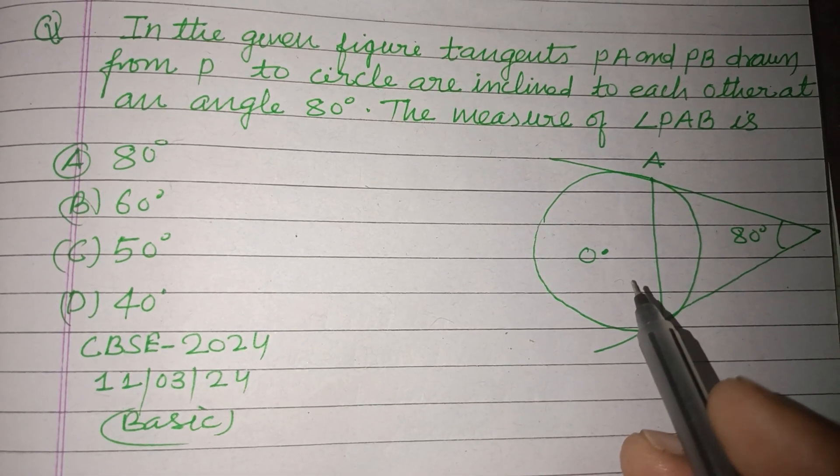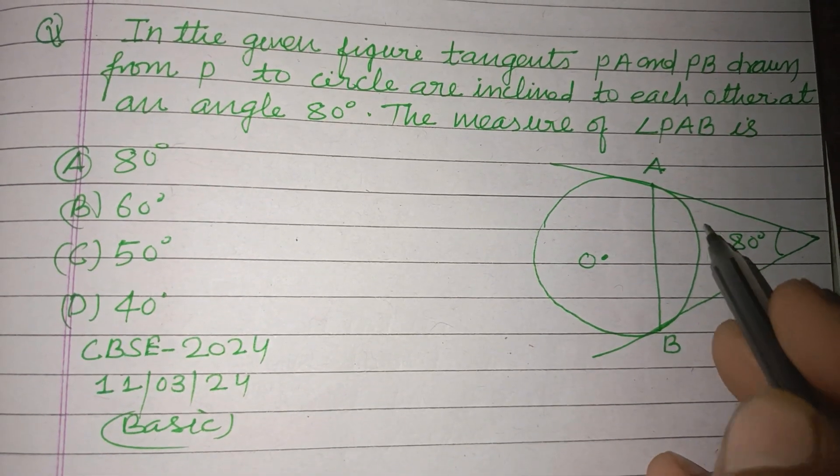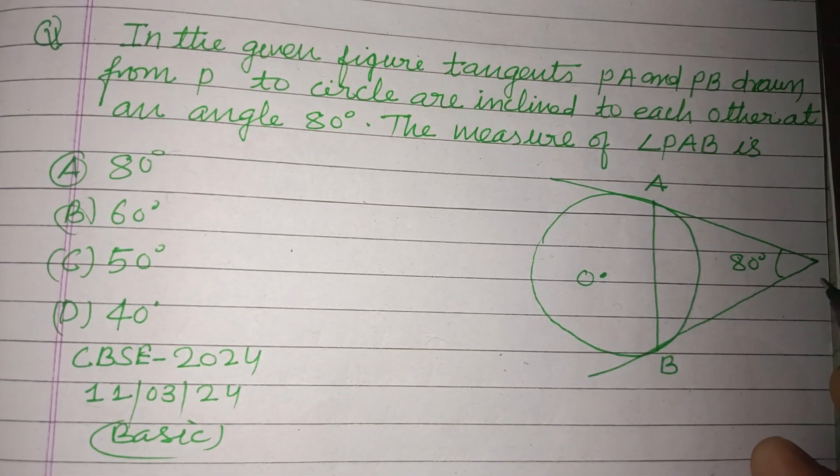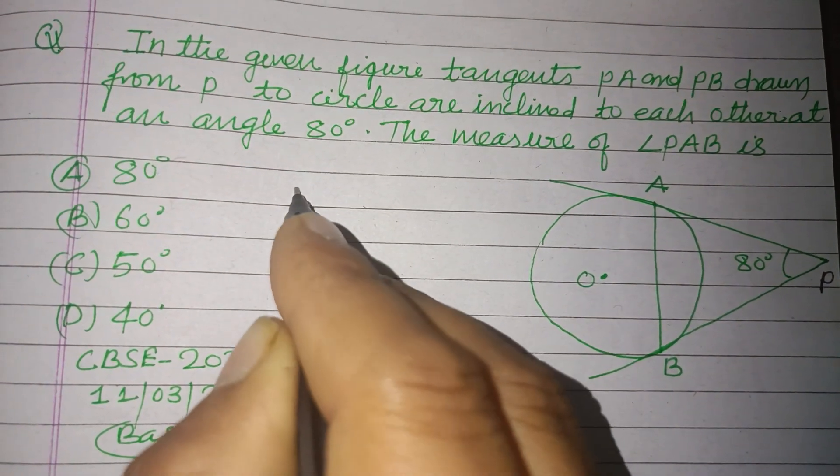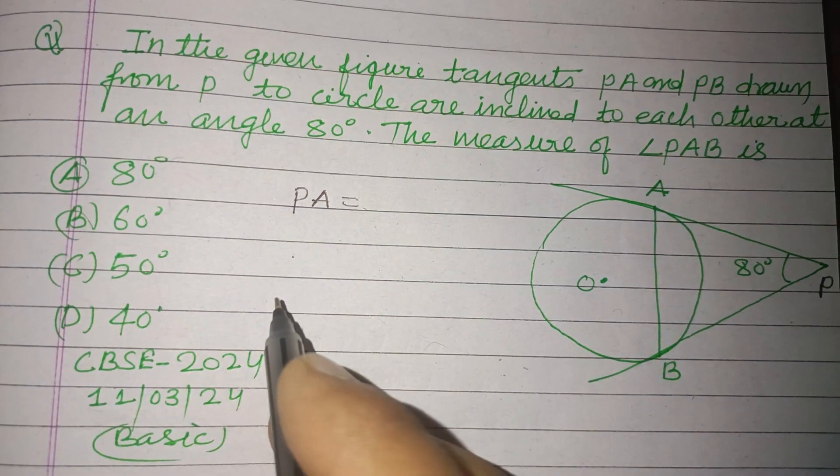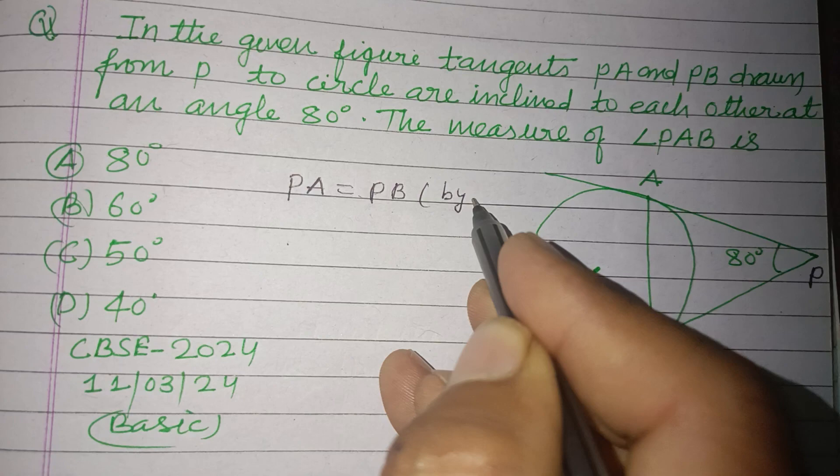of 80 degrees. The measure of angle PAB is what? So students, as you know that tangents drawn from an external point to a circle are equal in length, so PA equals PB by theorem.